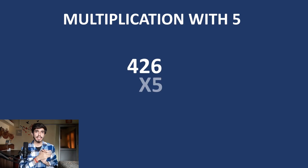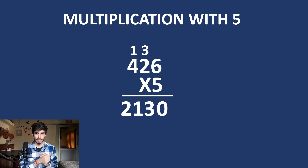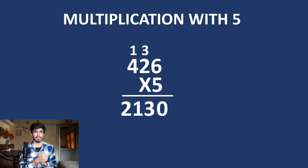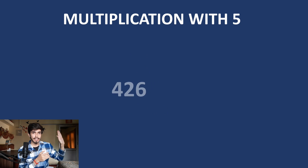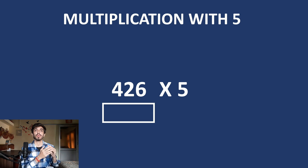In the Trachtenberg system, it is preferred to use pen and paper, though you can do it mentally. For example, if you want to multiply 426 by 5, traditionally you do it the standard way. In the Trachtenberg system, there is a specific way of writing: you write the number and below it you write the answer — nothing else. It is much more elegant.